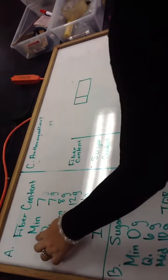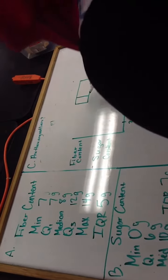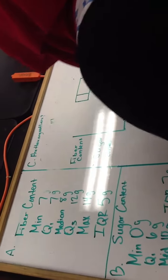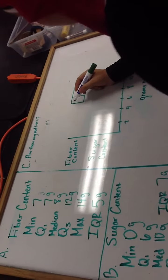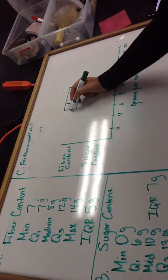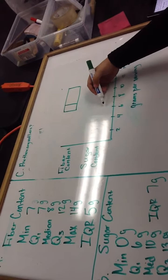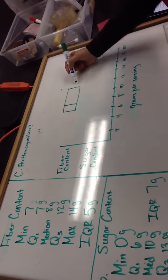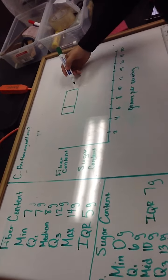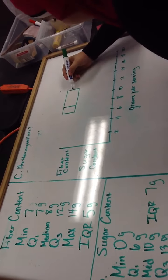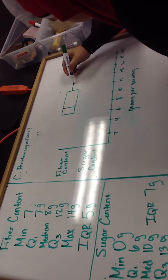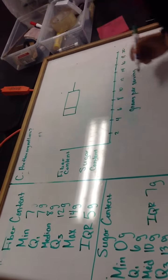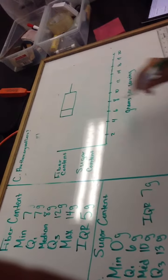And 7 is your minimum value, so you do not have a whisker going to 7 because your Q1 is already at 7, but you have a whisker going to 14 because that is your maximum value. And that is the box plot for fiber content.